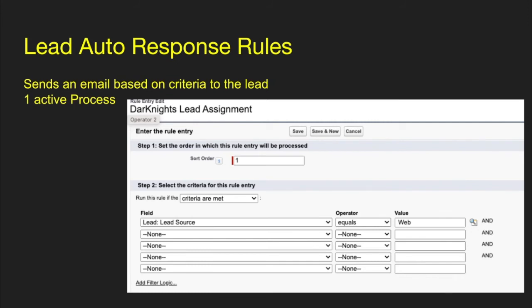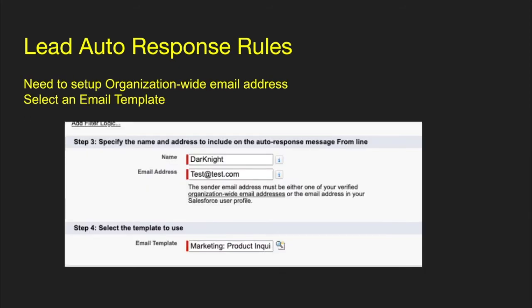Lead autoresponse rules will send an email out based on criteria on the lead, and this is typically done on the creation of a lead. A lot of times for your web-to-lead forms, you want to autorespond to that person saying we got your lead — you can set up lead autoresponse rules providing that you capture the email address. A couple of things to note: when you set this up, you have to specify the name and set up an organizational-wide email address. You also have to have an email template. Depending on your criteria, you can have different email addresses send things out with different templates.